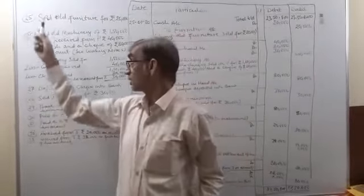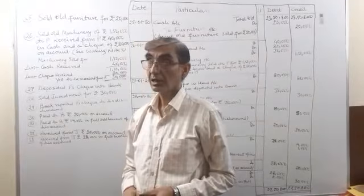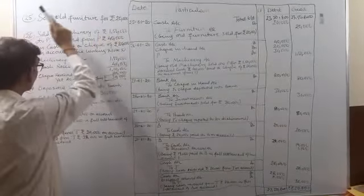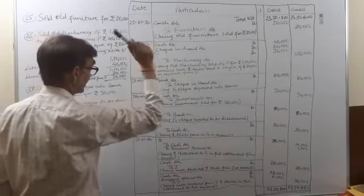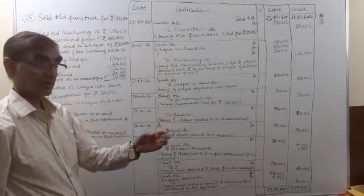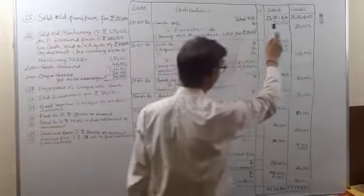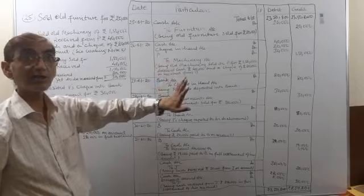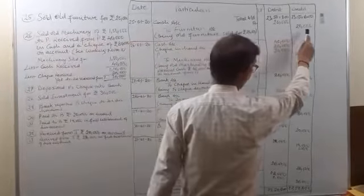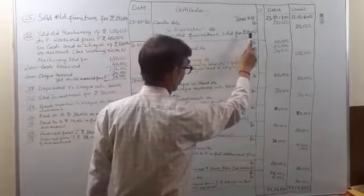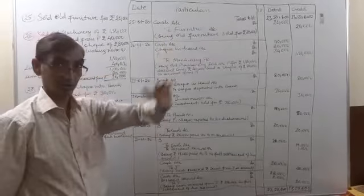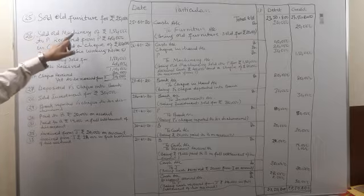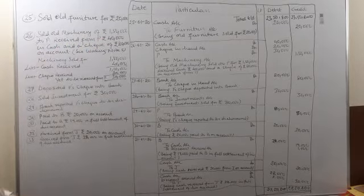Now we will start with the sale of assets and investments. The 25th transaction, on 25th January 2020, is: sold old furniture for rupees 20,000. When we are selling furniture, cash is coming in, so cash account will be debited rupees 20,000. Old furniture is going out — we write 'furniture account' (not old or new). Narration: being old furniture sold for rupees 20,000.